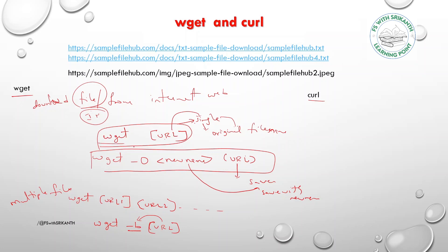When using the wget command, it can occupy the complete available internet speed. If you want to restrict the speed, you can use the --limit-rate option: wget --limit-rate=5000k [url]. This restricts the internet rate to the specified speed, like 5000 kilobytes.